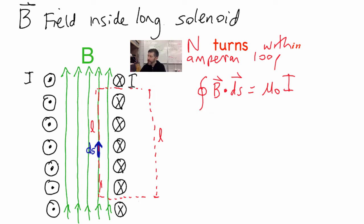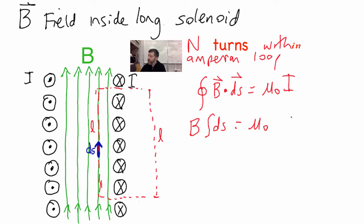B is constant by symmetry, so we can pull B out of the integral. Since B and dS are in the same direction, the dot product is 1, leaving just the integral of dS. On the right side, the current puncturing the loop: although I is the current in the wire, there are N turns, so the total current puncturing the loop is N times I — we must count the current every time it punctures the loop.